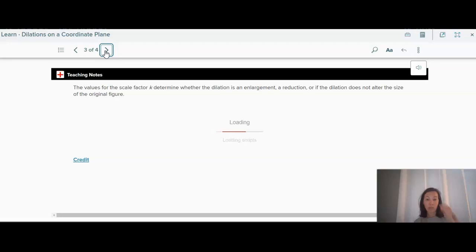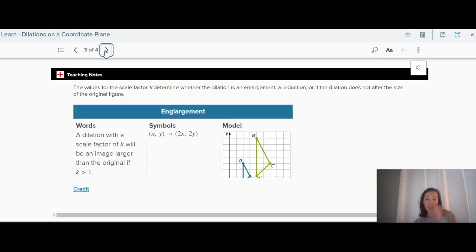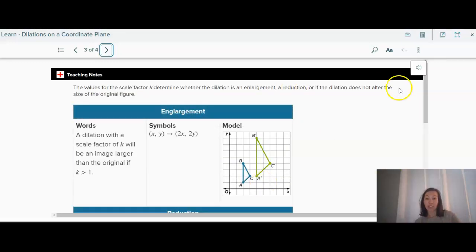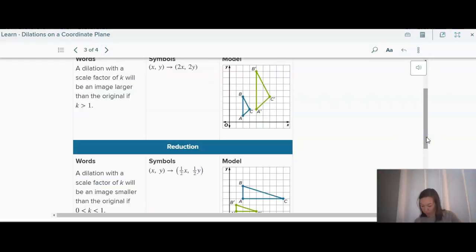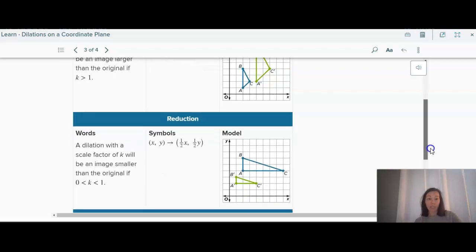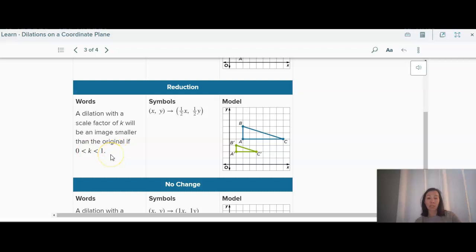Now, the values of the scale factor determine whether it's an enlargement or reduction or if the dilation does not alter the size. So if the scale factor is greater than 1, then this makes the image larger than the original. If the scale factor is on page 467, if the scale factor is between 0 and 1, so it can't be negative, just less than 1 and greater than 0, so in this case, 1 half.